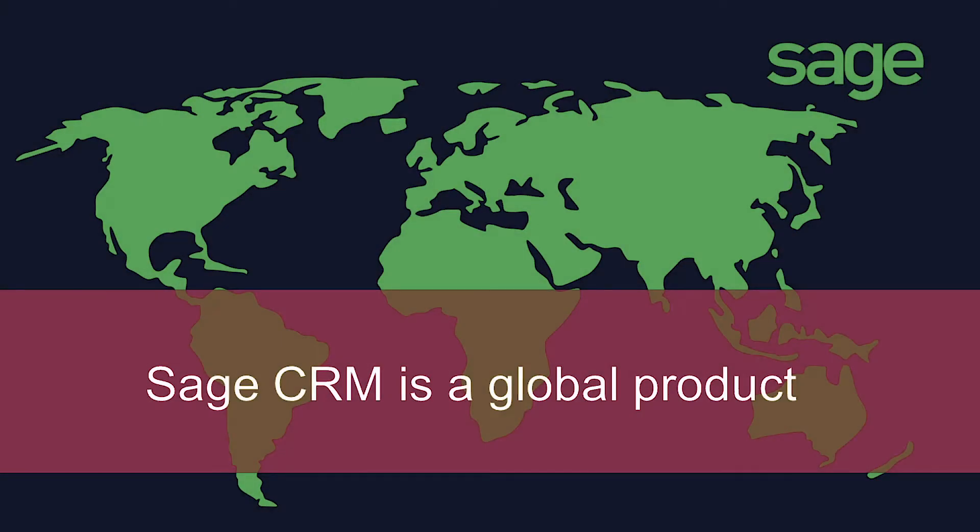Sage CRM is a global product. It's actively sold on five of seven continents, and we have customers and users in six of those continents. So, though I'm preparing this session for a UK event, much of what I have to say is applicable for every country in which Sage CRM is sold — that's Singapore and Jamaica just as much as the UK and Ireland.